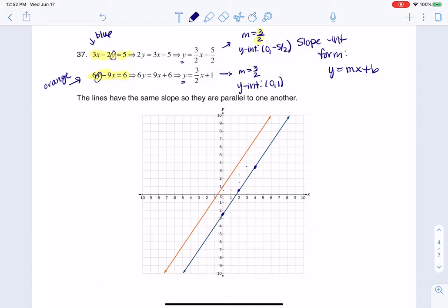So for this orange line, you see me starting at (0, 1), and then I go up 1, 2, 3, and go to the right 1, 2, because that's what the slope said to do.